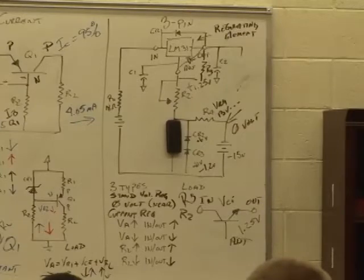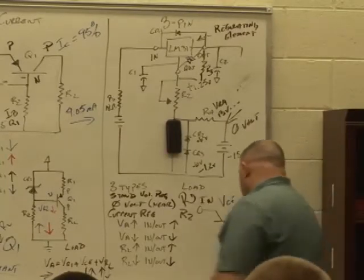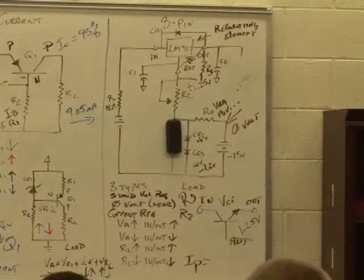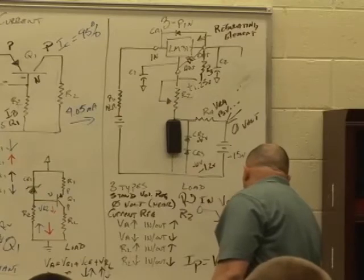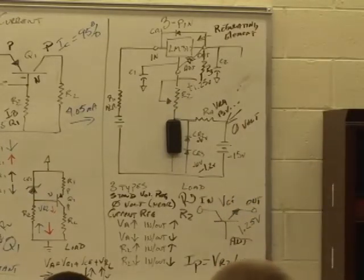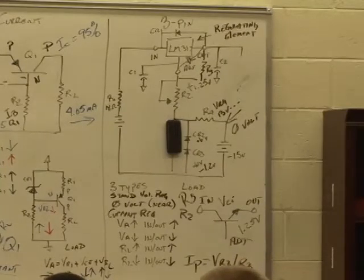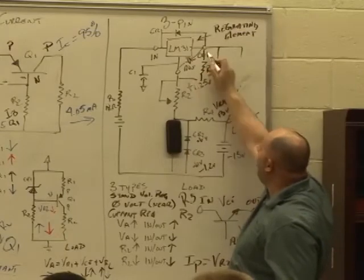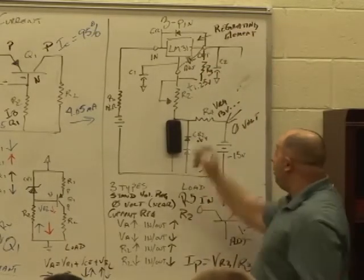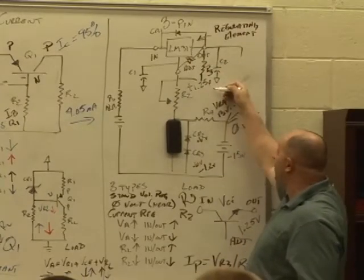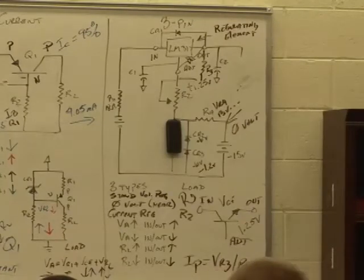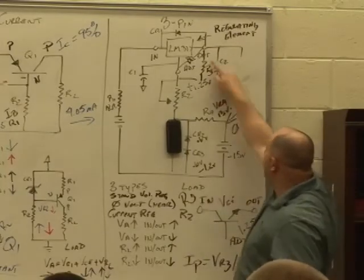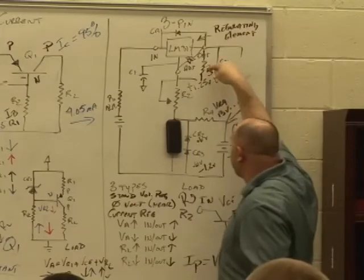R3, again, is called the program resistor. Is it not? Yes sir. R3 sets the what current? Rhymes with program current. Program current. I sub P. Program current equals what? Vr3 divided by R3. Vr3, do we know what that voltage is? Yes. What is it? 1.25 volts. Why is it 1.25 volts? It's in parallel with the chip. The out and adjust pin. Out and adjust pin is constant. It's in parallel with R3. Therefore, Vr3 must be 1.25 volts. If I divide that by the value of R3, it's going to give me what's known as the program current. That program current, hey, R2 feels that same current because R2 and R3 are in series.